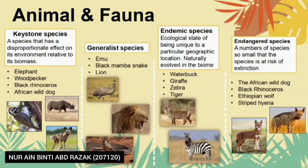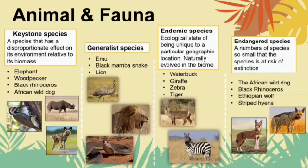I will explain about the animals and fauna in tropical grassland and savanna. First, the keystone species — species that has a disproportionate effect on its environment relative to its biomass. Examples include elephant, buffalo, black rhinoceros and African wild dog. Next, the generalist species, which are able to thrive in a wide variety of environmental conditions and can make use of a variety of different resources, such as emu, black mamba snake and lion.